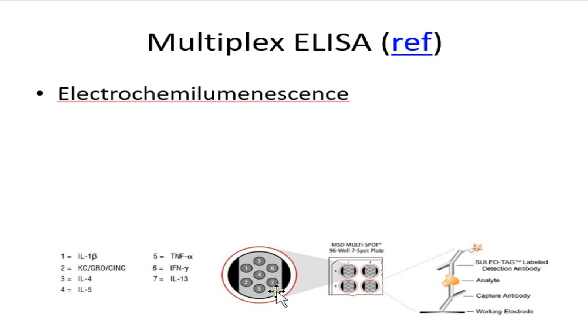And the way this platform generally works is each one of these little regions in the well will be coated with a capture antibody. And then when you add the sample, your target of interest will bind to the capture antibody. And then subsequently you'll add the detection antibody afterwards which will have this sulfo tag attached.